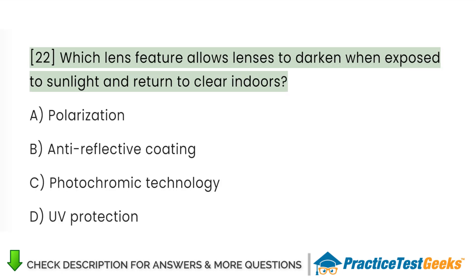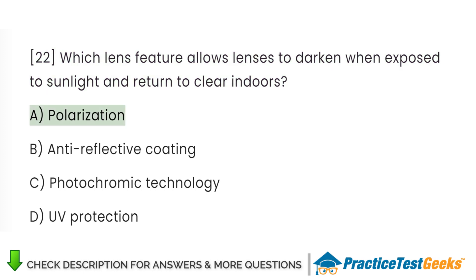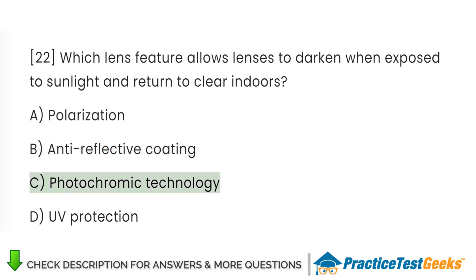Which lens feature allows lenses to darken when exposed to sunlight and return to clear indoors? A. Polarization. B. Anti-reflective coating. C. Photochromic technology. D. UV protection.